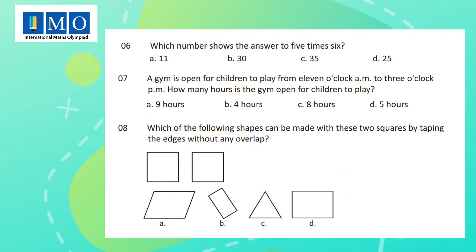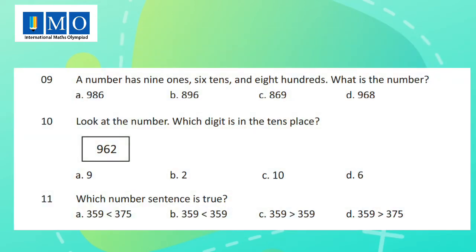Question 8: Which of the following shapes can be made with these two squares by taping the edges without any overlap? Question 9: A number has nine ones, six tens, and eight hundreds. What is the number? Question 10: Look at the number. Which digit is in the tens place?